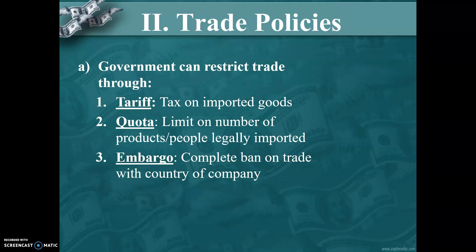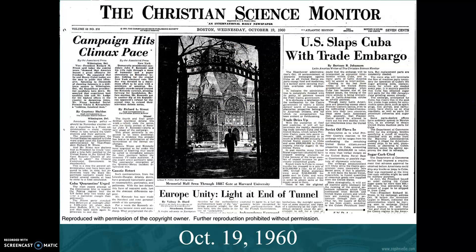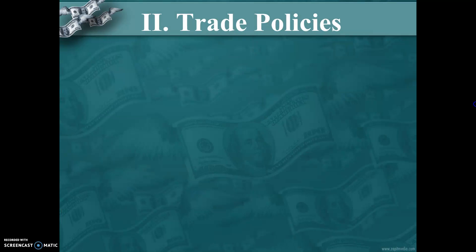An embargo is where you completely cut off all trade with a nation or company. Right now we sort of have an embargo with Russia. Looking back, we had an embargo when we were colonies with Great Britain — the majority of colonists said they wouldn't buy British products or pay British taxes. In 1960, shortly after the fall of the old Cuban government and the rise of a communist nation there, the U.S. slapped Cuba with an embargo that lasted 65 years until President Obama, in his second term, decided to drop it. Now we have begun to trade with Cuba again.